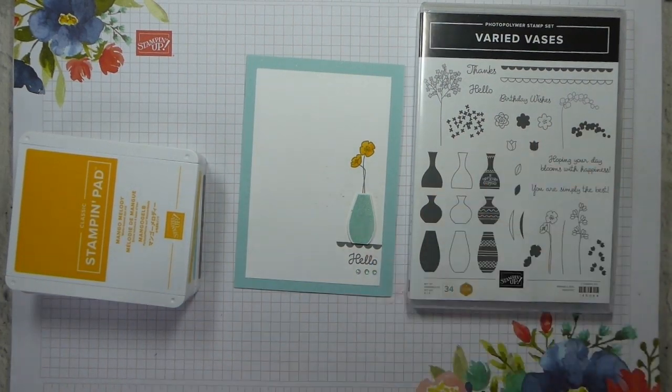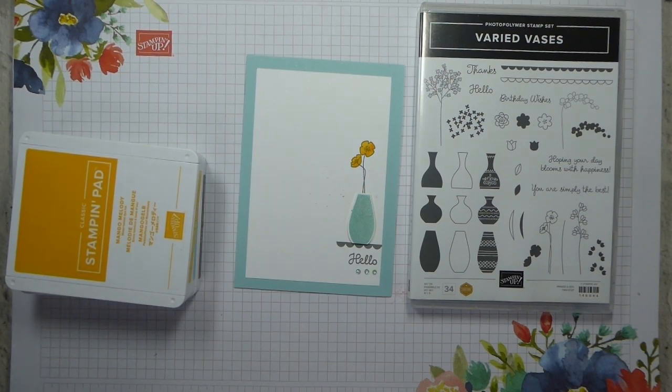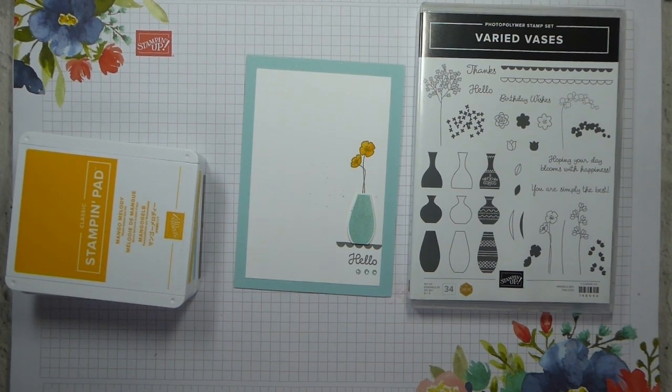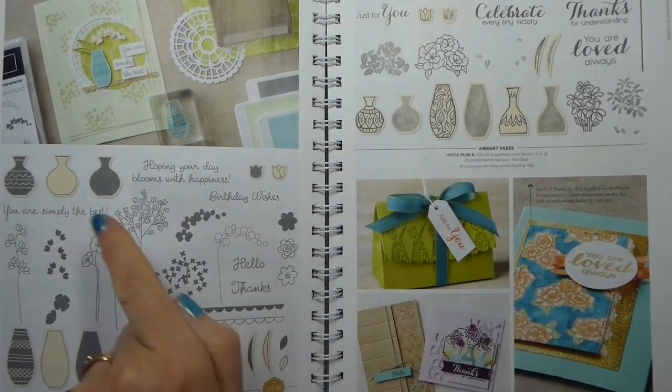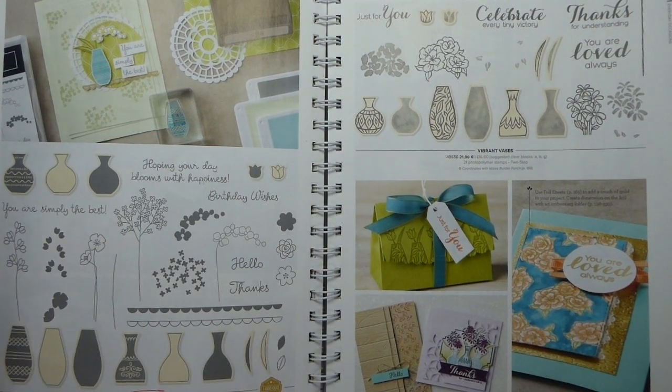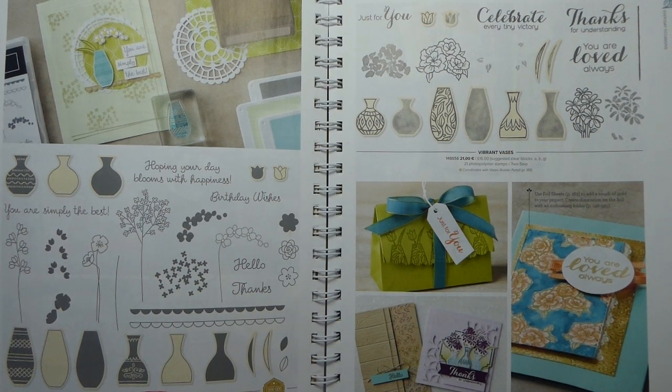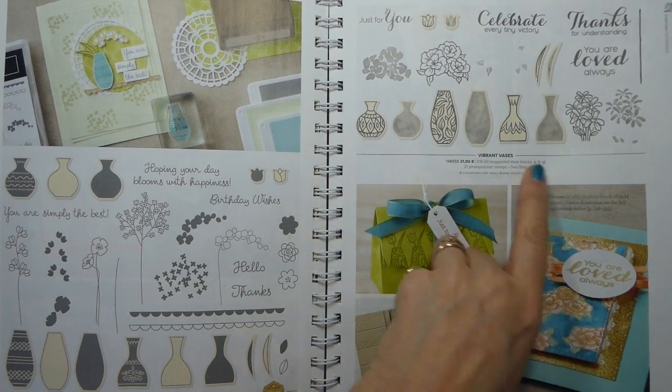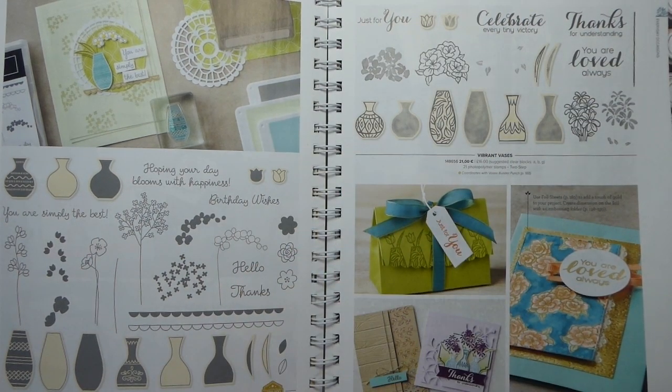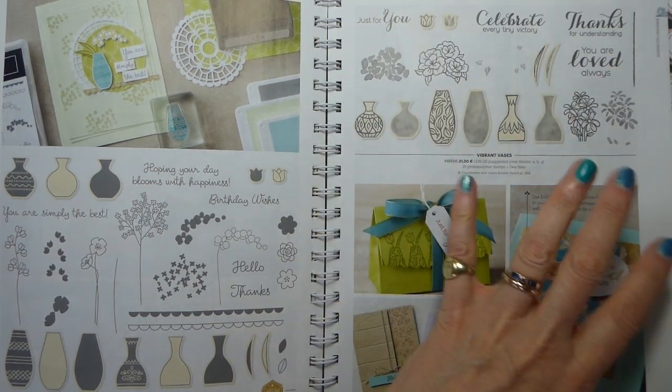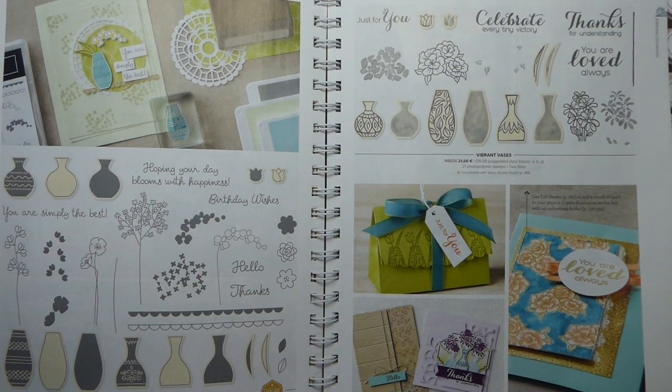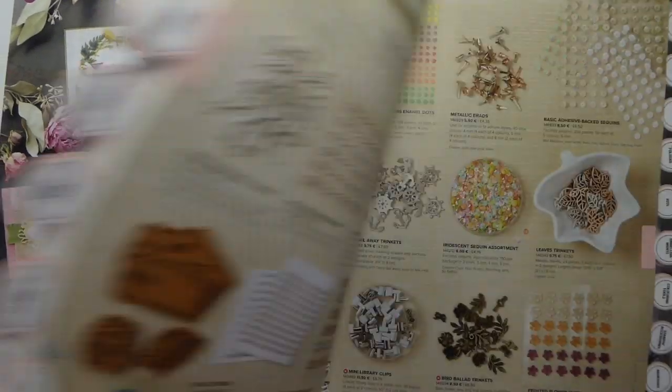It's also got a second stamp set that goes with it. So once you've got a punch, you can use both. I'm trying to see if I can find where it is in the catalogue. It's Vibrant Vases and it's on page 61. So we've got both of the stamp sets on opposite sides of the page. This is the original, and this one was designed with Mary Fish as her million dollar achievement recognition. And then this one has come out as a second stamp set with some alternatives for the vases and some other sentiments. So really useful, two stamp sets, one punch. Could not be better.